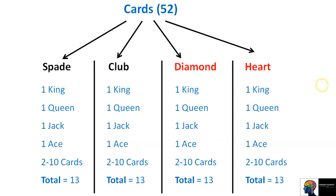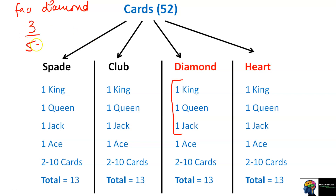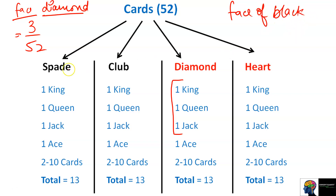Now, if the question changes scenario: if it says 'face card of diamond,' then we only look at diamond's face cards — there are 3, so probability is 3 by 52. If it says 'face card of black color,' then we consider Spade and Club, which are black, giving 3 plus 3 = 6 face cards.